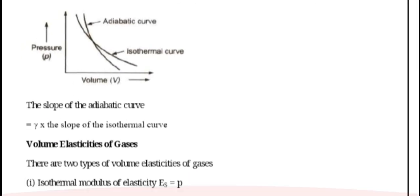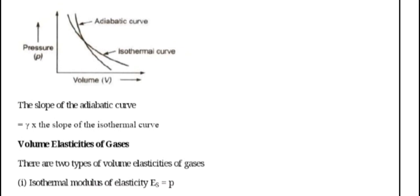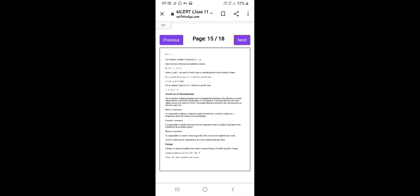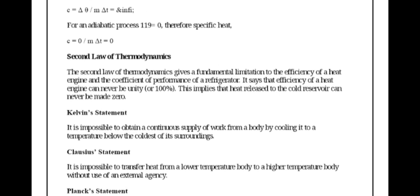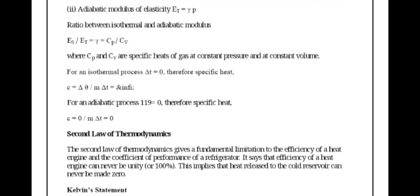Elastic modulus of gases: There are two types - isothermal modulus of elasticity Es equals P, and adiabatic modulus of elasticity Et equals γP. Therefore, the ratio Es/Et equals 1/γ equals Cv/Cp.